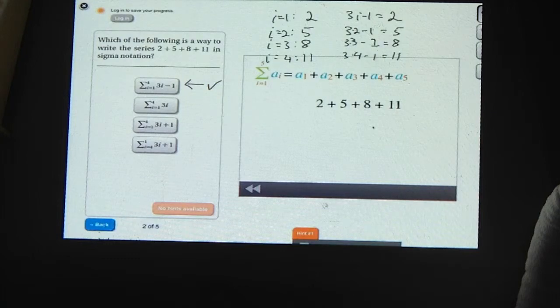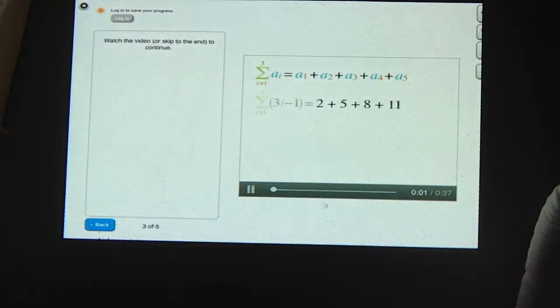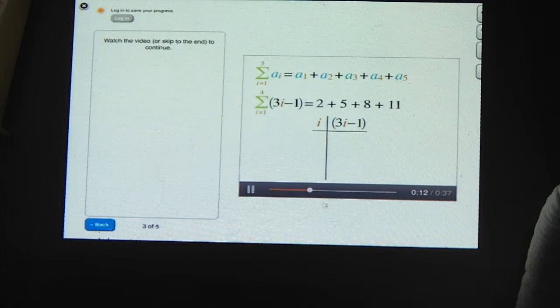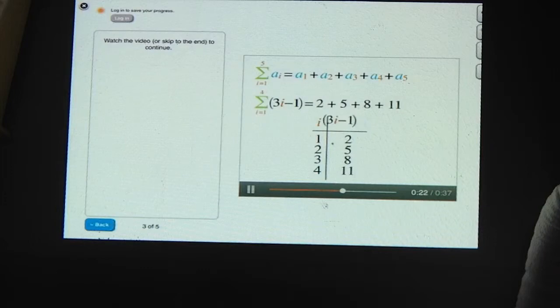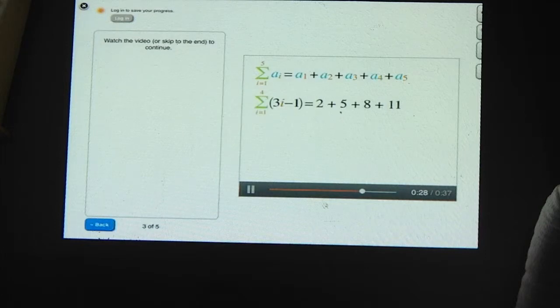You can try the other ones, but you'll find that they don't work for every term, or they don't work at all. Right, here it is. You can read this as the sum from i equals 1 to 4 of 3i minus 1. To see why this is right, you can also draw an input-output table. i goes from 1 to 4, and so 3i minus 1 has the values 2, 5, 8, and 11 for each of those values of i. So this sigma expression is the sum of 3i minus 1 when i goes from 1 to 4. So that's the sum of these numbers.